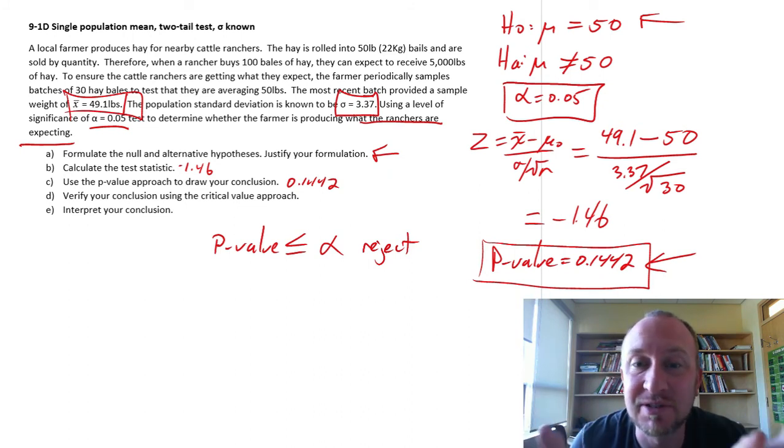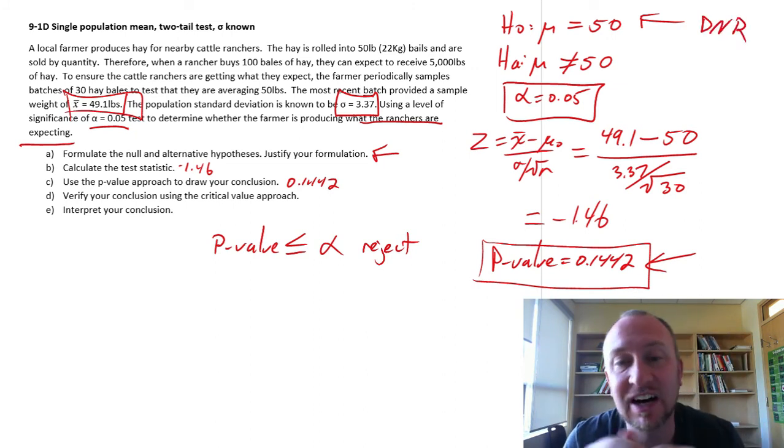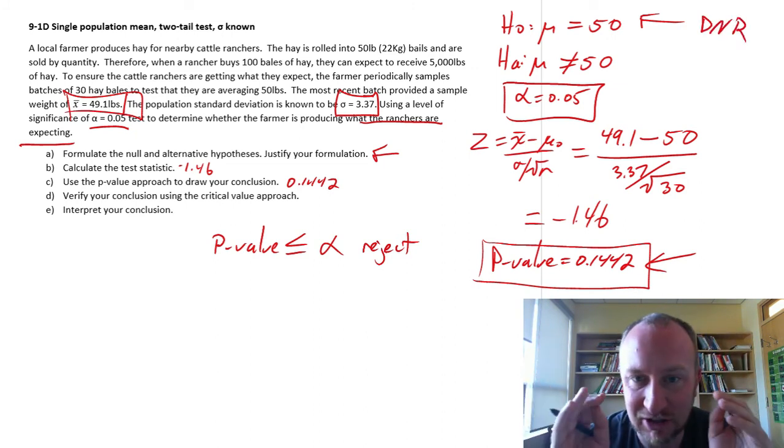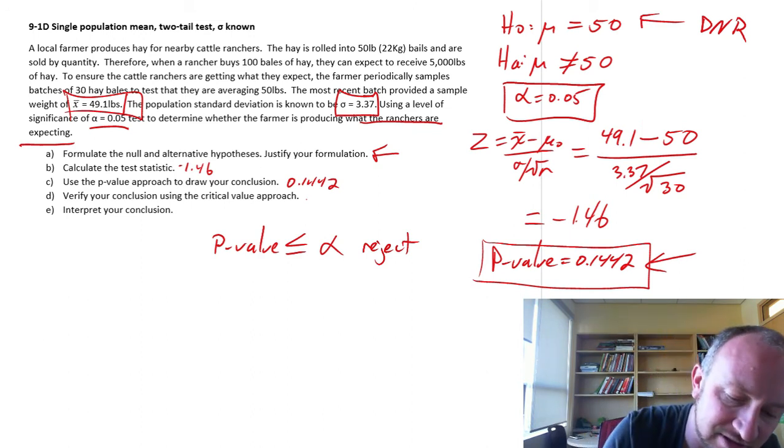So, our evidence here now supports the null hypotheses that we are unable to say that we're deviating from our target of 50 pound bale of hay. Let's use the critical value approach.